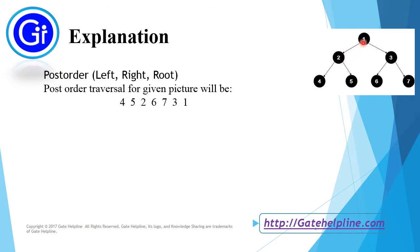Since for this node the left subtree is visited, we will now traverse the right subtree. Go to here, again visit the left subtree — 6. Since there is no left subtree or right subtree of this node, so this is visited. Now we will traverse the right subtree for this node, which is 7 and which is visited. Since 6 and 7 are visited, we will now visit its root, which is 3.